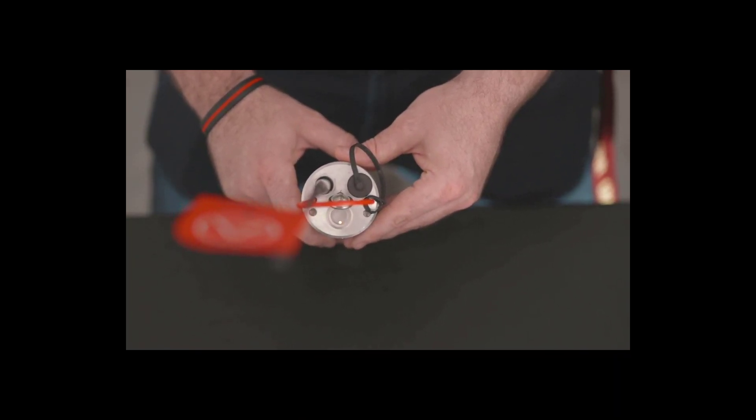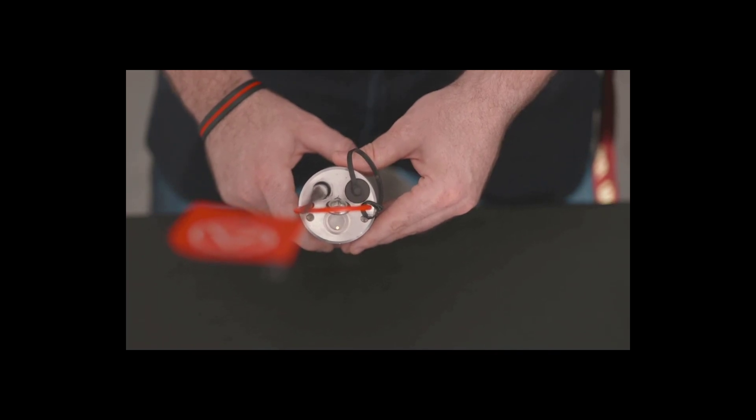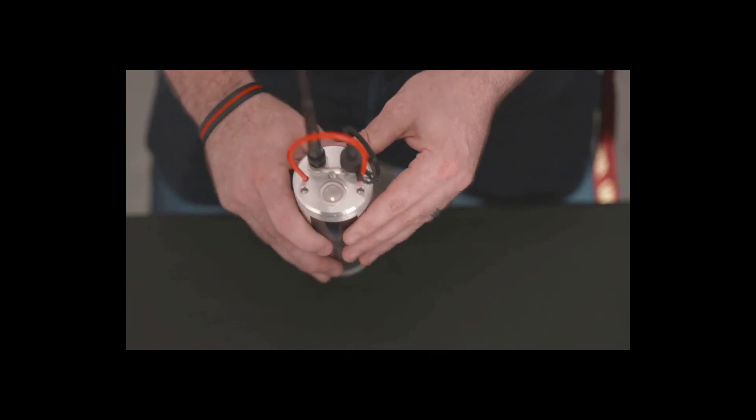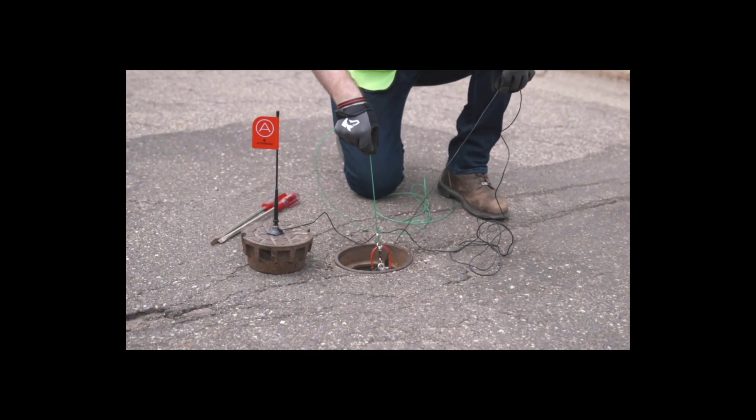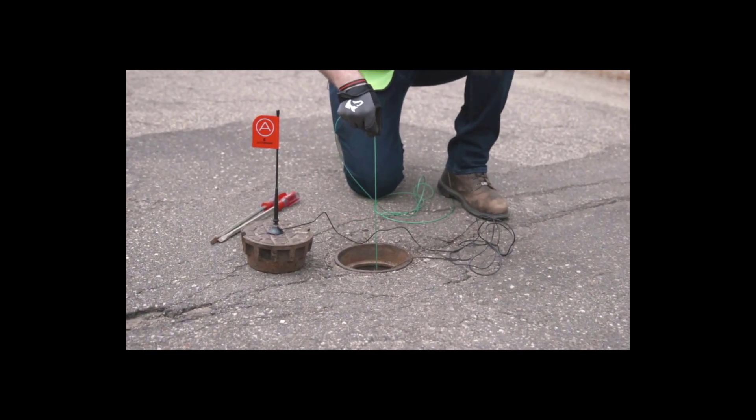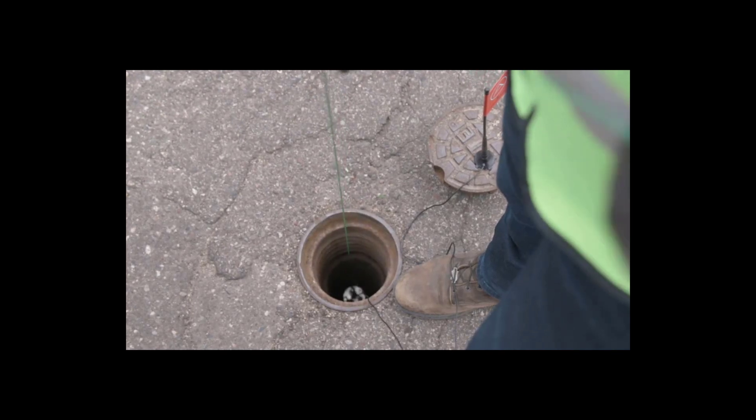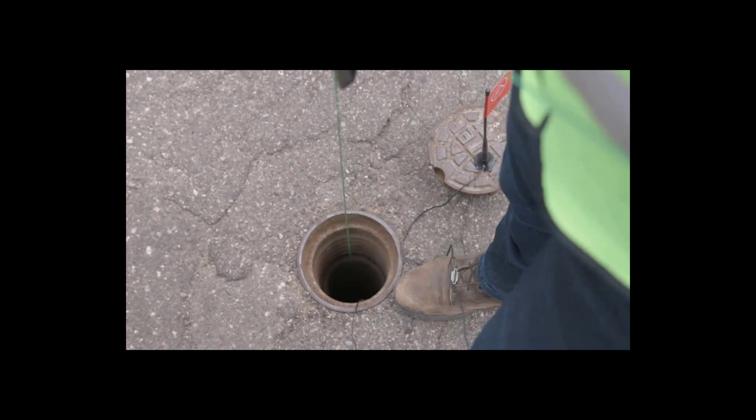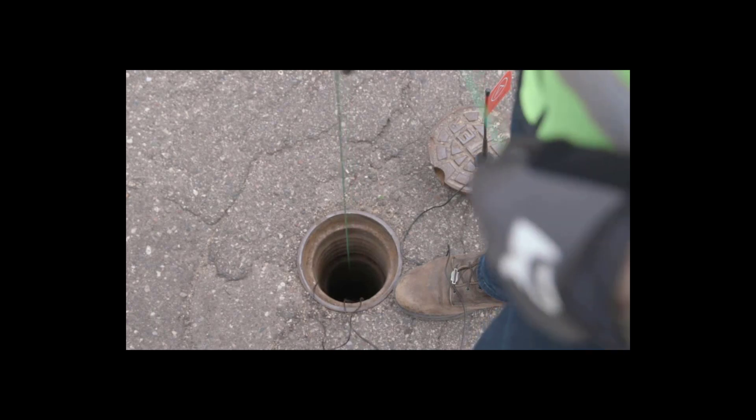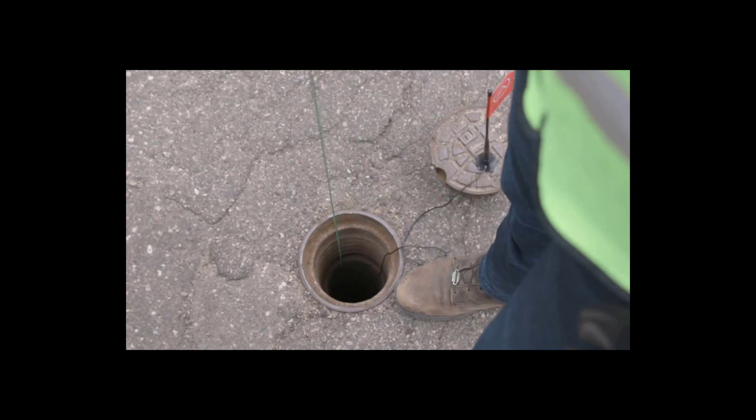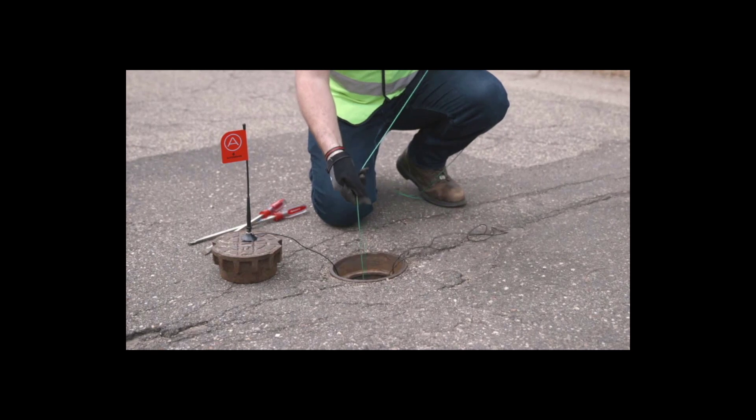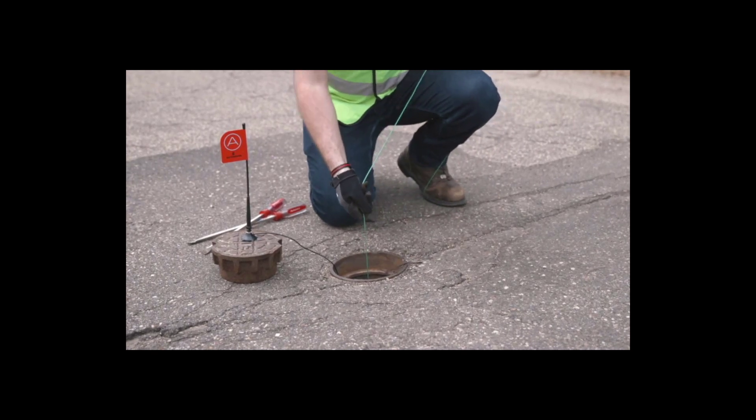When using either settings, please ensure that both sensors are on the same power setting. When lowering the sensor down into a valve box, it is always recommended a cable other than the extended antenna is used to prevent damage to the antenna. Always make sure to turn the sensor on prior to lowering it down into the valve box. You can confirm the power is on by looking for a solid red light on top of the sensor.